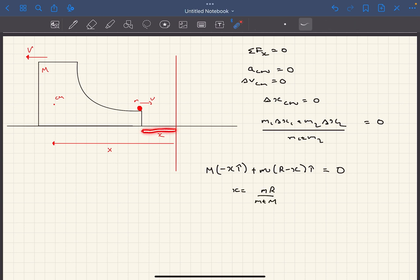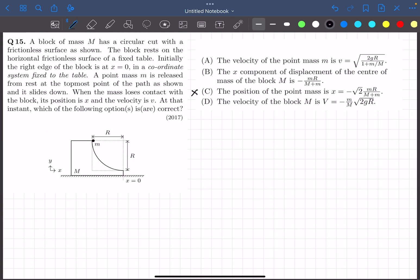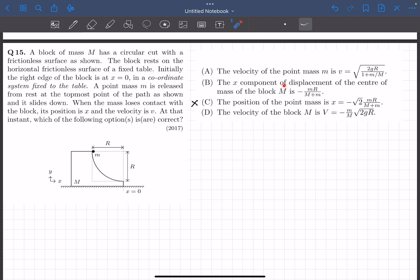So the distance of the small m mass from the origin is MR divided by small m plus capital M. So if we check out the options, option C is wrong. The position of the point mass x is wrong.